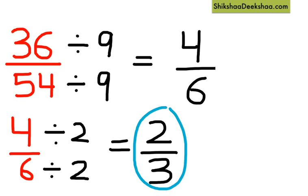We cannot find any number other than 1 which can divide both the numbers. So 2 by 3 is the simplified form of 36 by 54.